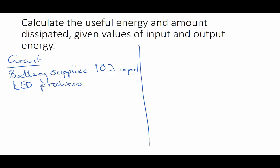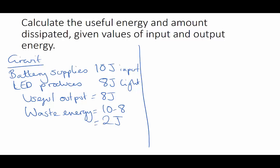So our LED is producing 8 joules of useful light energy. The useful energy is just the amount of light, so that useful energy is 8 joules. The waste energy can be calculated as the difference between the amount of energy that went in and the useful energy, so we do 10 minus 8 which gives us 2 joules of waste energy. That energy is going to be wasted in the form of heat or thermal energy.